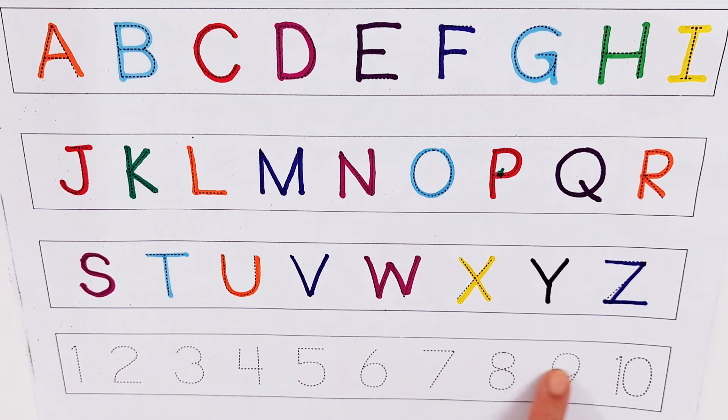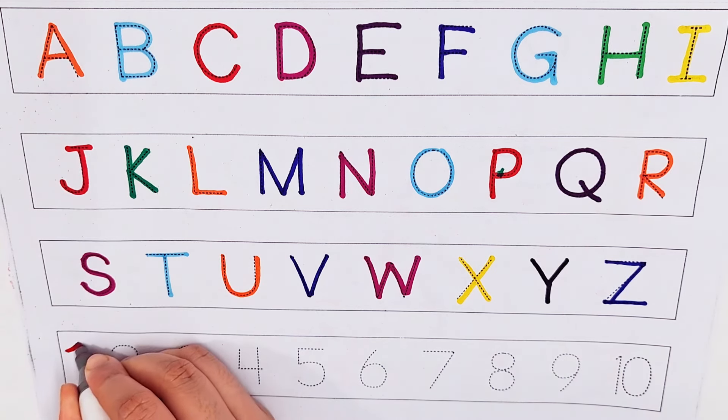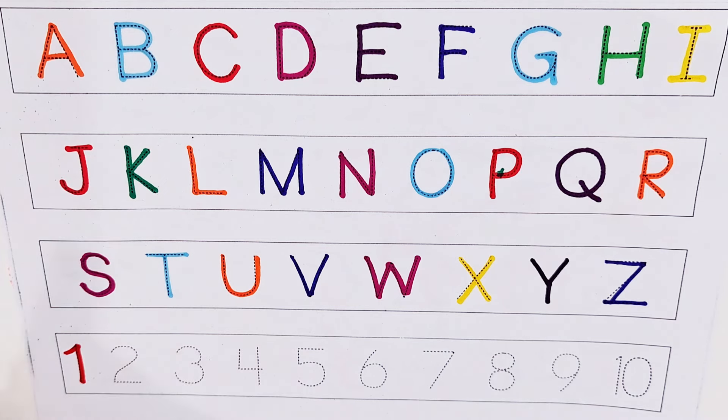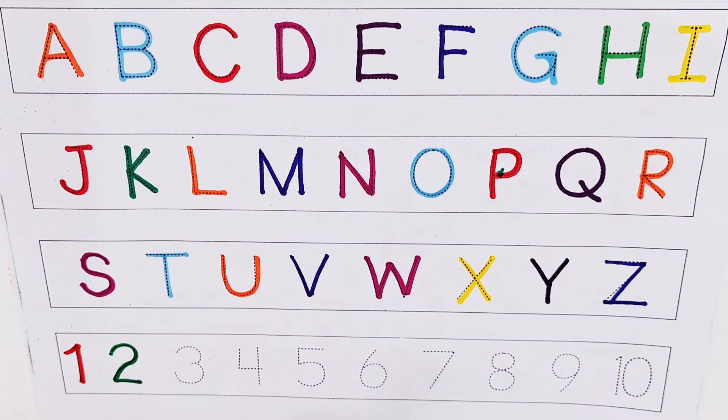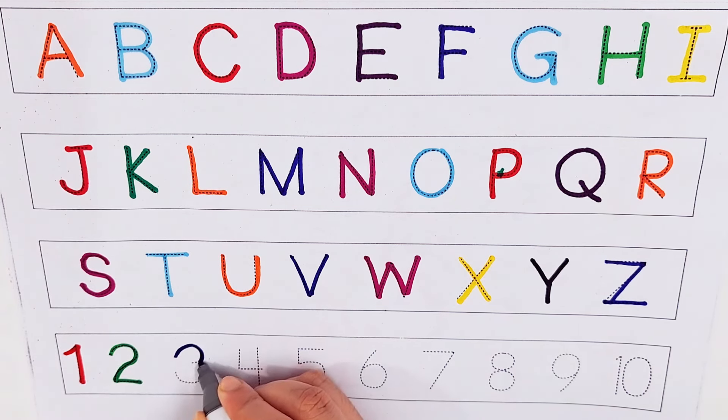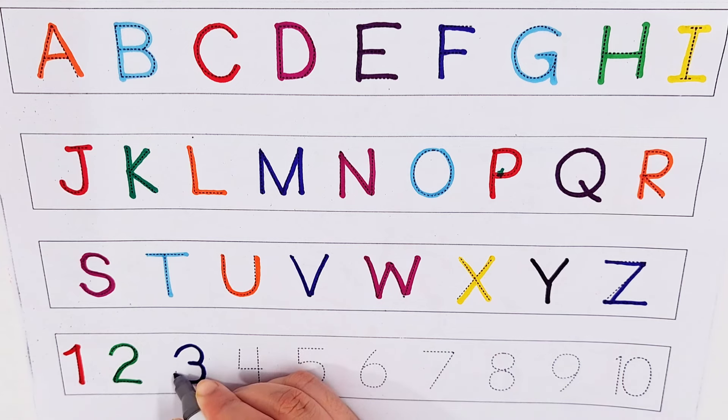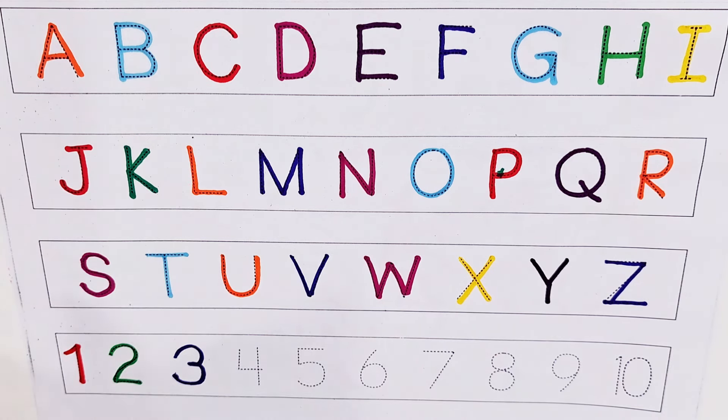Let's try to count some numbers. Number 1: O-N-E, one. Number 2: T-W-O, two. Number 3: T-H-R-E-E, three. Number 4: F-O-U-R, four.